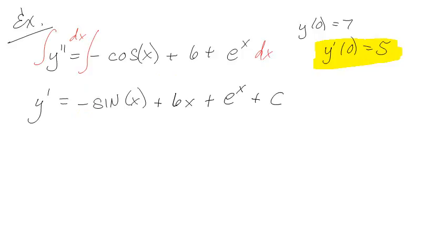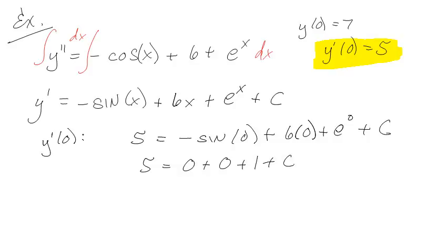So then that just stays 6x plus e to the x plus c. Now I can actually apply one of my initial value conditions here, because I know that y prime at 0 is 5. So negative sine of 0 plus 6 times 0 plus e to the 0 plus c. So c is equal to 4. Yay!